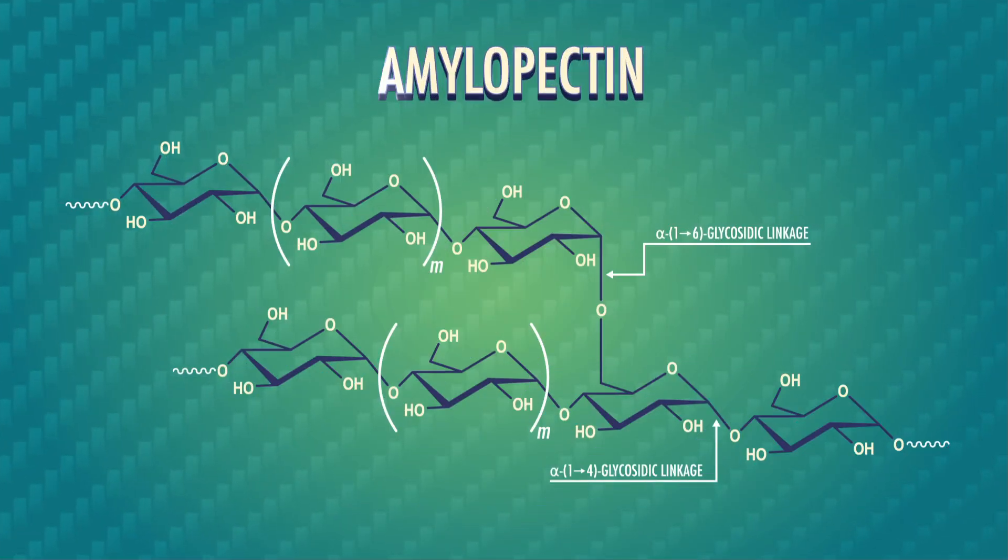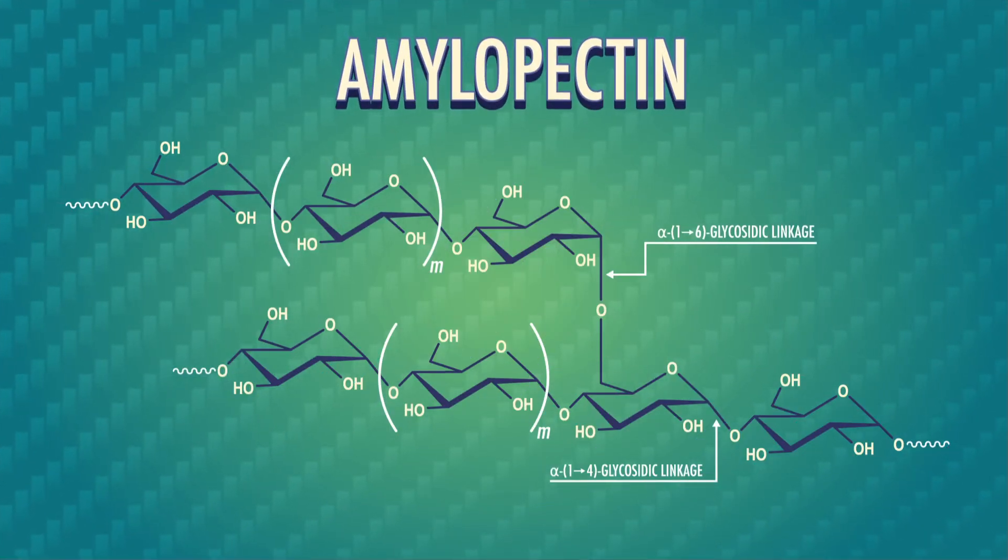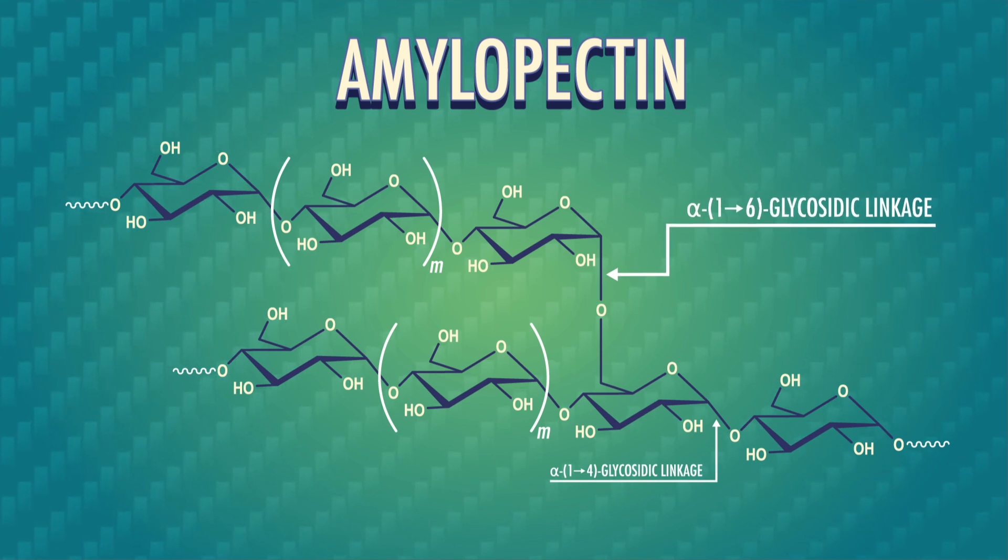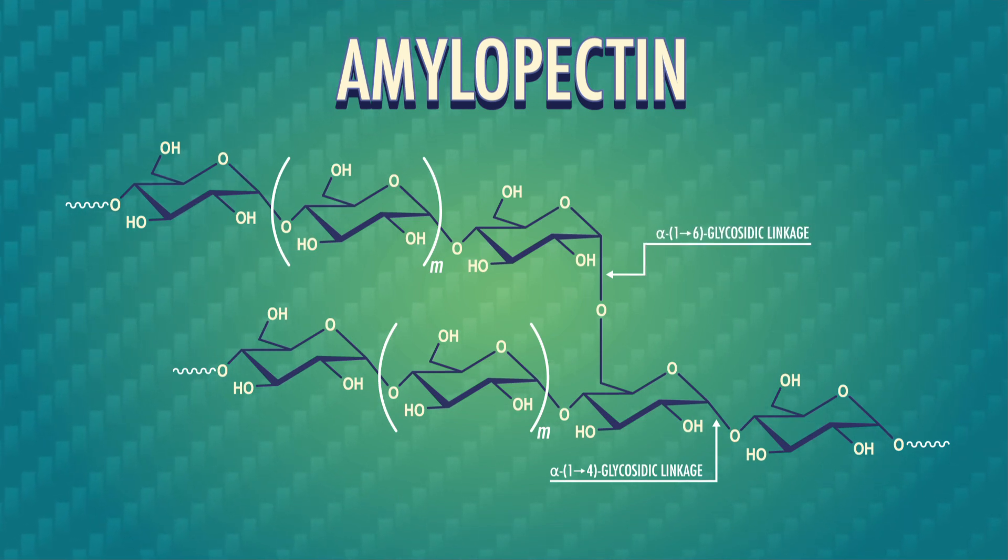The other part of starch is amylopectin, which has some alpha-1,6 glycosidic bonds sprinkled in. As you can see from its bulkier structure, this polymer takes up more storage space in the plant. But it's also easier for humans to digest.